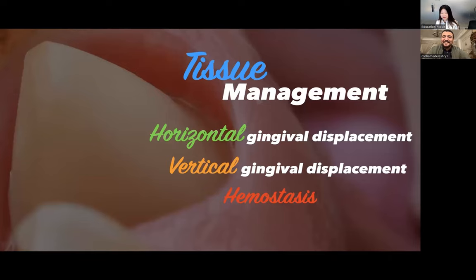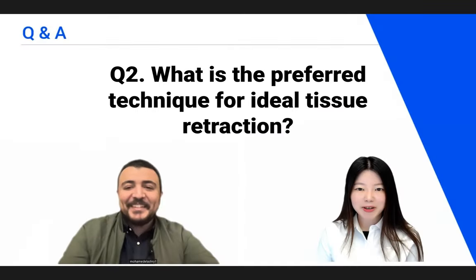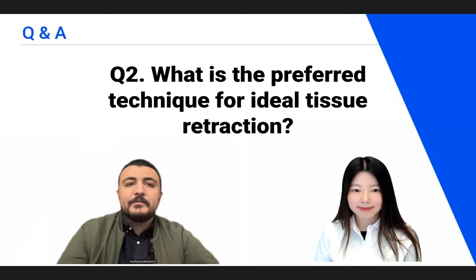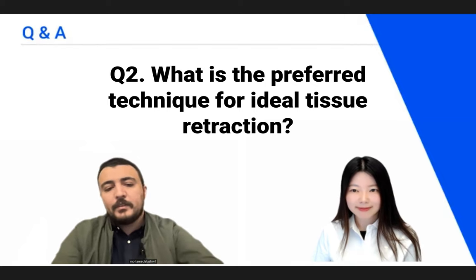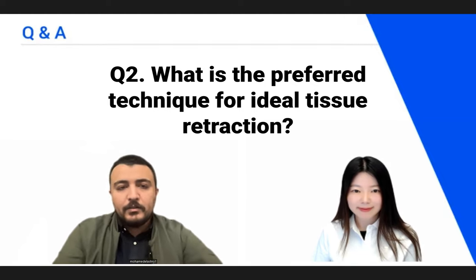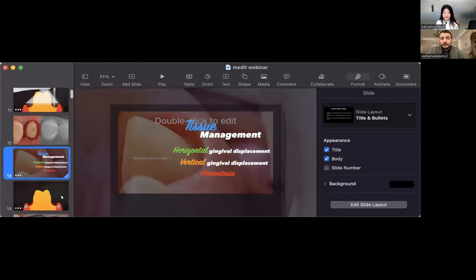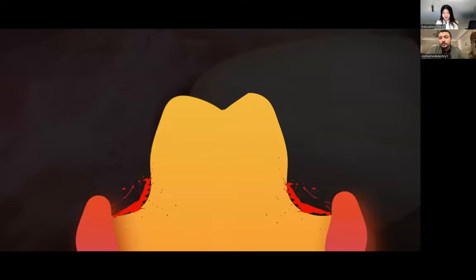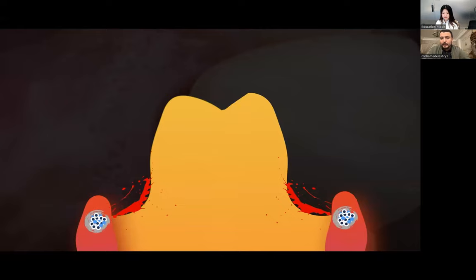Question number two: what is the preferred technique for ideal tissue retraction? This is also a very important question. My answer is that I don't have one single preferred technique — my preferred technique depends on the situation that I need retraction for. I need retraction for vertical and horizontal displacement of the gingiva and to stop bleeding.